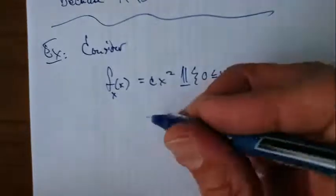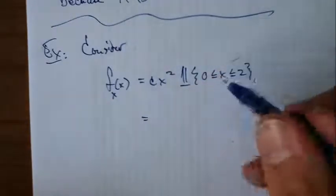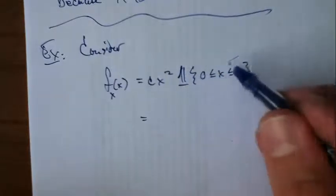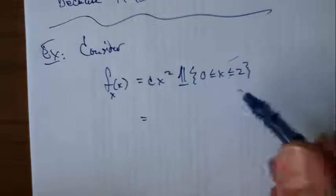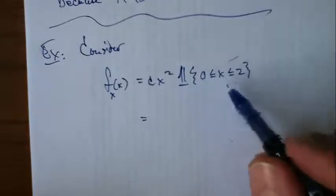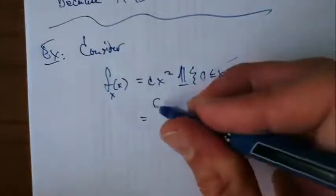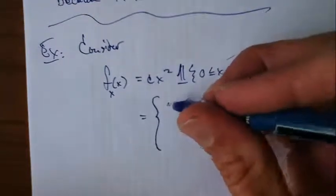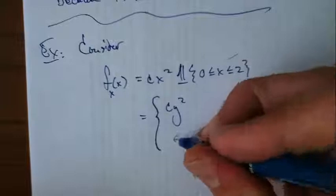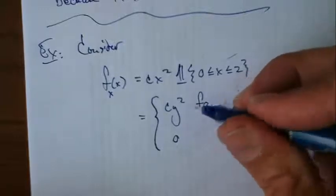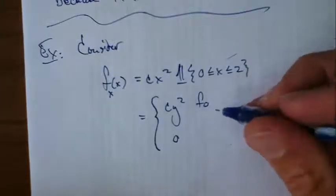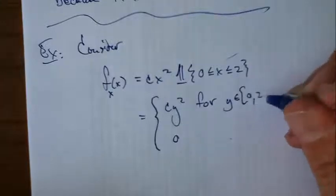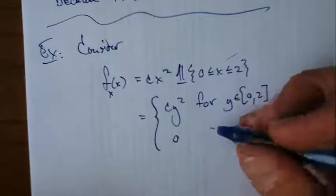And again, just to remind you, this indicator function evaluates to 1 if the statement inside the braces is true. It's 0 if the statement inside the braces is false. So another way to write it, perhaps a way that you're more familiar with, but it takes more ink, is like this. It's going to take on the value of c times y squared for y in the interval 0 to 2 and 0 otherwise.